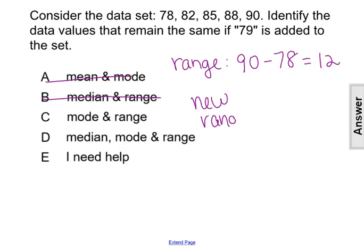The new range, let's see. If we're adding 79 into the mix, into the data set, we're still taking the highest number of 90 and the lowest number of 78. It's still going to be 12. 79 isn't the highest or lowest number, so the range is not going to be affected.